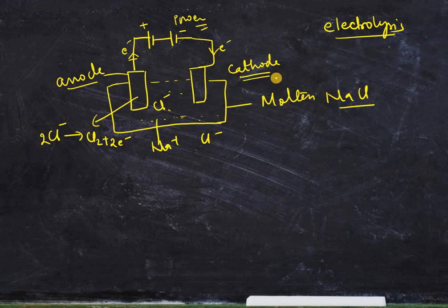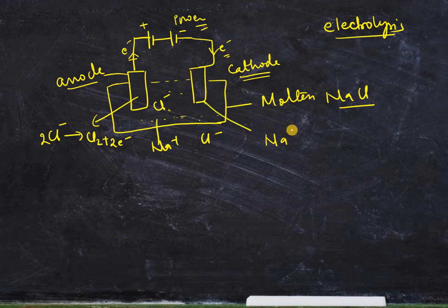At the cathode, remember: cation goes to cathode. The cathode has more electrons, so the sodium ion takes an electron and becomes sodium in its liquid stage. The equation at the cathode is: Na⁺ + e⁻ → Na.